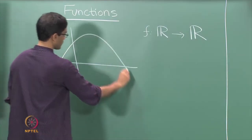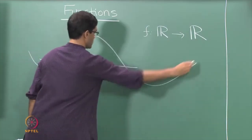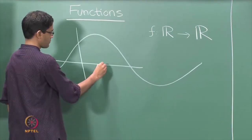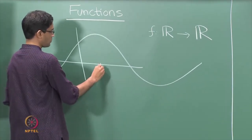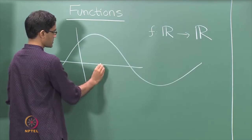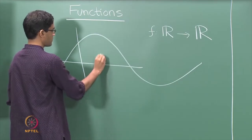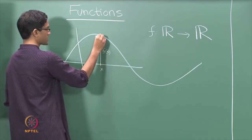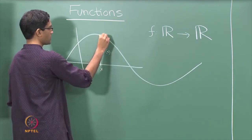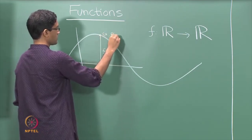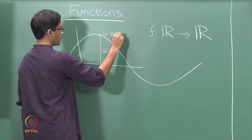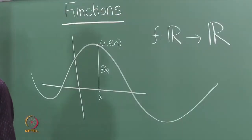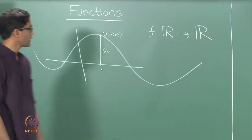This is how we mostly think of functions. What this really means is that for each value of x, there is the function value f(x), which is what is denoted along the y-axis. The point here is just (x, f(x)), and we join all these points as x takes all possible real values.